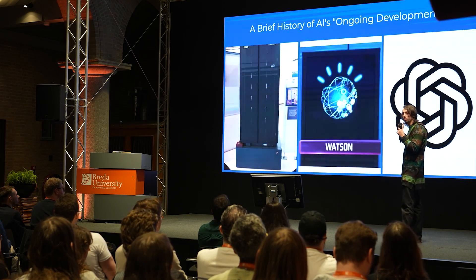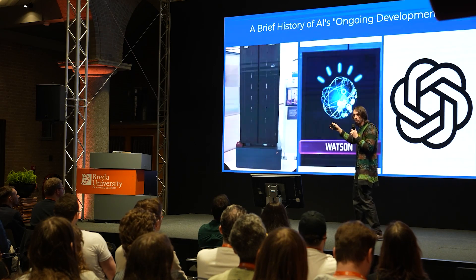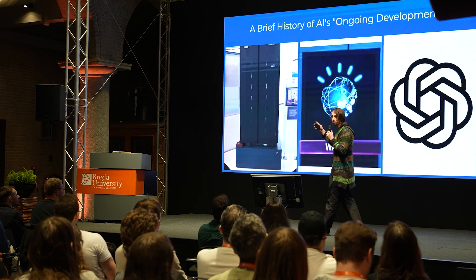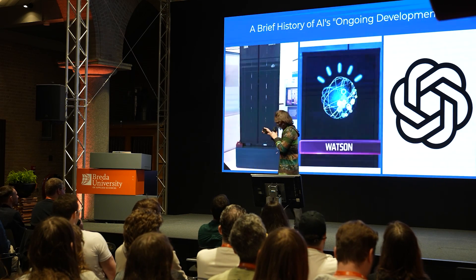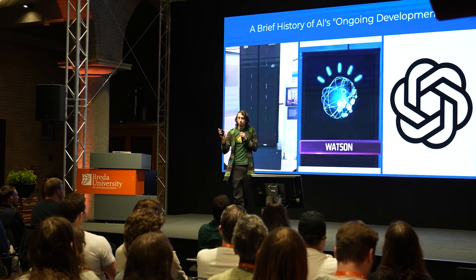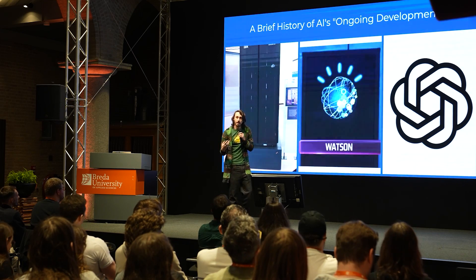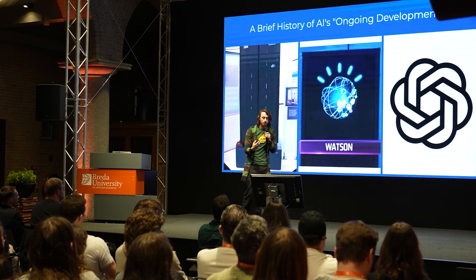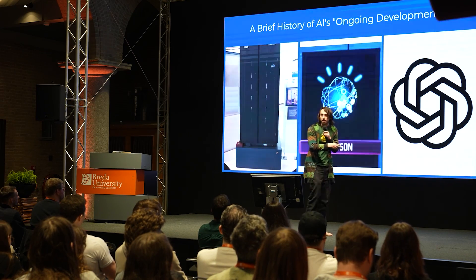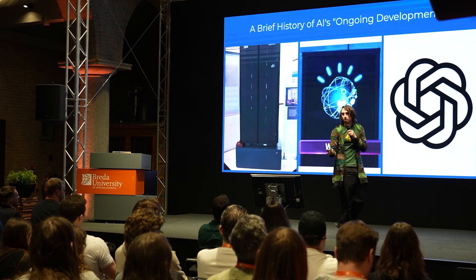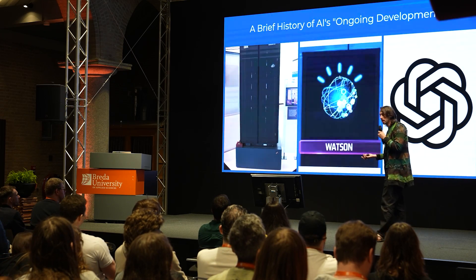I've got some history here. We've got Deep Blue on the left, which was invented because some guy didn't want to learn how to play chess. Then we've got IBM Watson, which was a guy that was really bad at trivia and didn't know how to read the encyclopedia. And then finally, OpenAI — ChatGPT — because Sam Altman is bad at responding to emails.